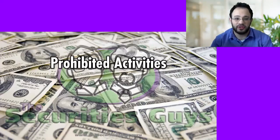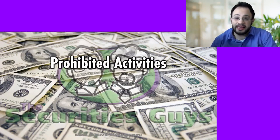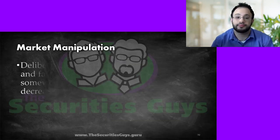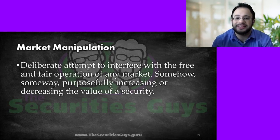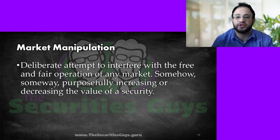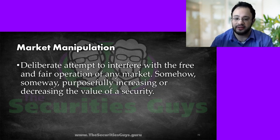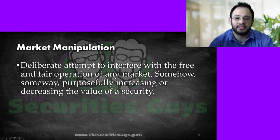To finish up this chapter, we're going to be discussing the prohibited activities — the things that we are not allowed to do. Market manipulation is the deliberate attempt to interfere with the free and fair operation of any market, purposefully increasing or decreasing the value of a security. There are several ways this can be done that we will be discussing.